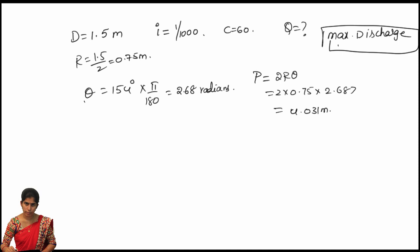Area A is equal to R squared into (theta minus sin 2 theta by 2). That is equal to 0.75 square multiplied by 2.687 minus sin 2 times of 154 degrees by 2. By solving this we got a value of 1.733 meter square.